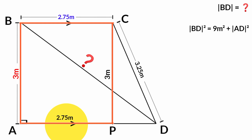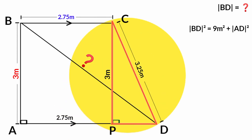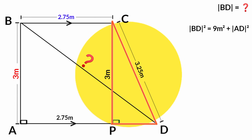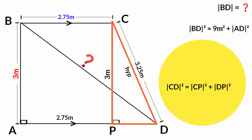This side and this side are also congruent, so AP is also 2.75 meters. Now, this angle is a right angle because this side is parallel to this side, which is at a right angle with this side. Therefore, triangle CDP is also a right angle triangle. By Pythagoras, line CD squared equals line CP squared plus line DP squared.